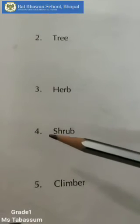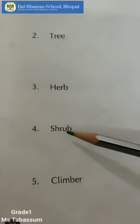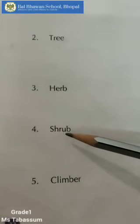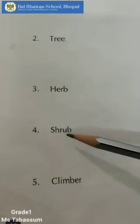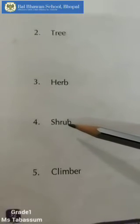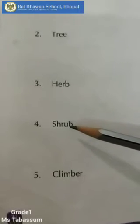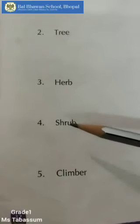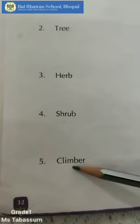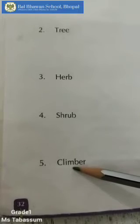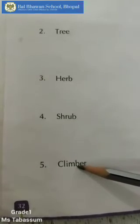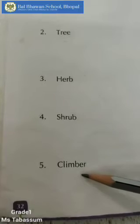Number 4: Shrub — small plants with woody stems, just like bushes. They are called shrubs. And number 5: Climbers — they have weak stems and need support to grow.